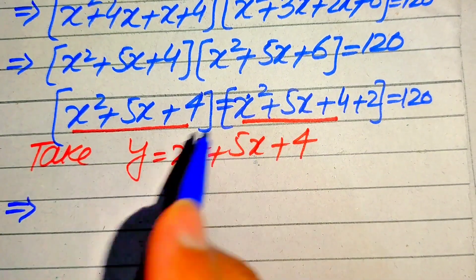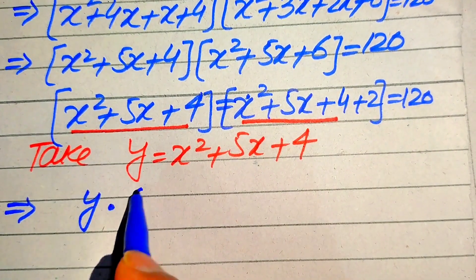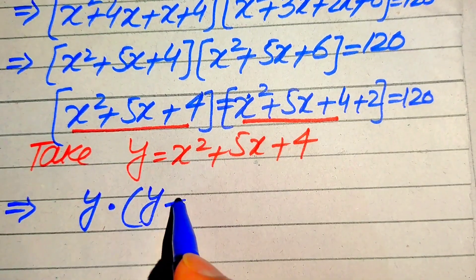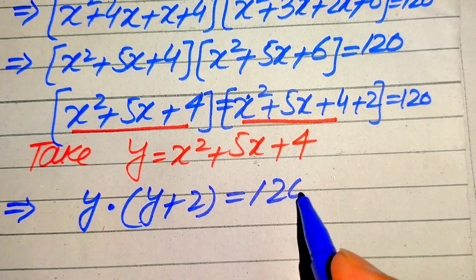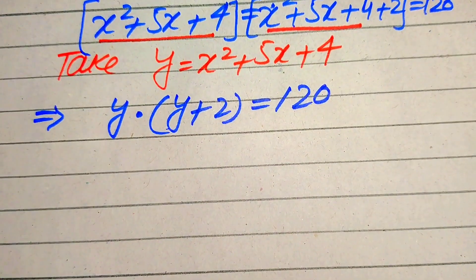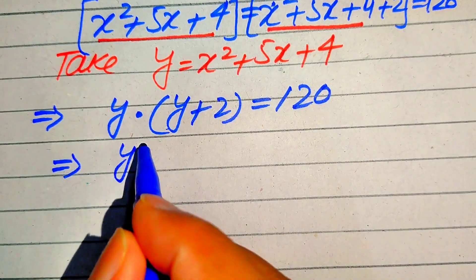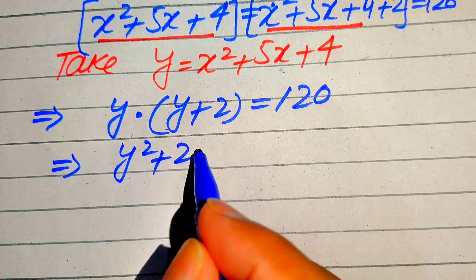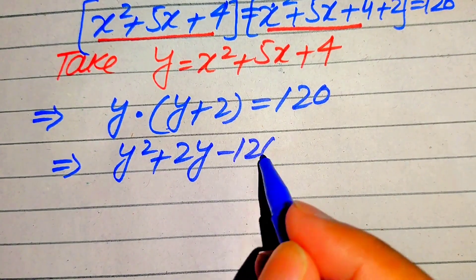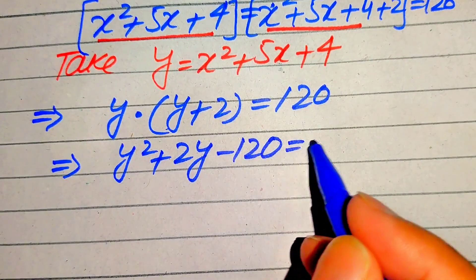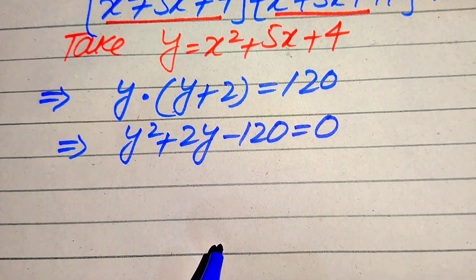When we substitute this value into the factors, it becomes y(y + 2) = 120. Multiplying y on both terms gives y² + 2y, and moving 120 to the left-hand side gives y² + 2y − 120 = 0.